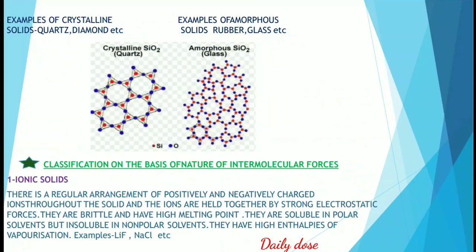You can see the structures here — the red dots depict silicon and the blue dots depict oxygen atoms. You can see the arrangement of crystalline silicon dioxide and amorphous silicon dioxide — that's quartz and glass. Notice the orderly arrangement of atoms in crystalline silicon dioxide and the haphazard arrangement in amorphous silicon dioxide.